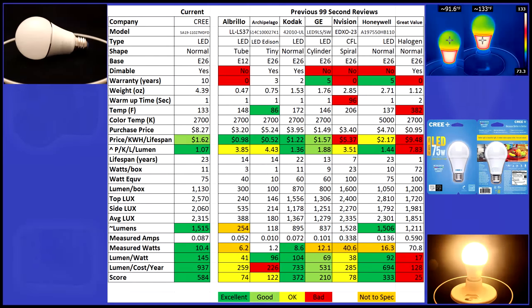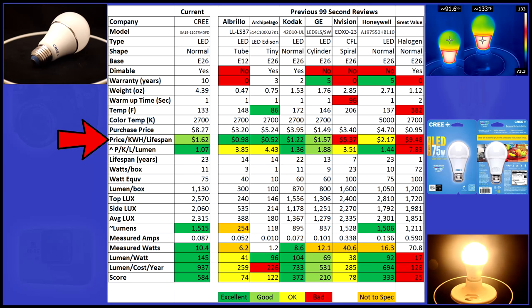This bulb was nothing short of extraordinary. It's dimmable, it has a 10 year warranty, and it runs fairly cool. Its cost per year is good at $1.62, and lumens per cost is excellent earning a score of 107.